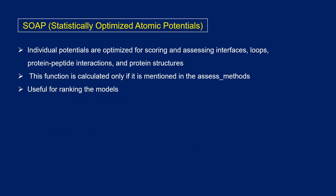SOAP stands for Statistically Optimized Atomic Potentials. A set of individual potentials are optimized for scoring and assessing interfaces, loops, protein-peptide interactions, and protein structures. This function is not calculated by default — you need to uncomment this function in the input script to apply this evaluation method to the model. It is also useful for ranking the models.